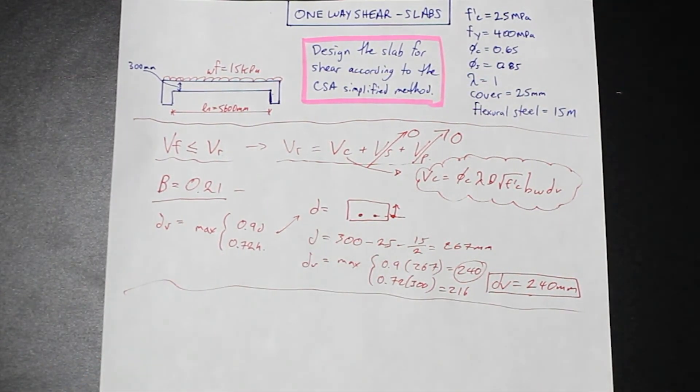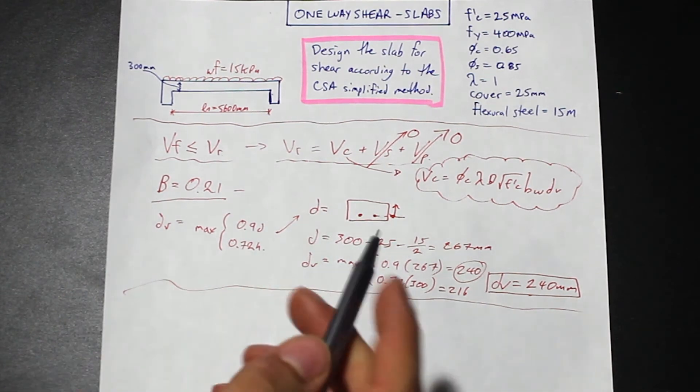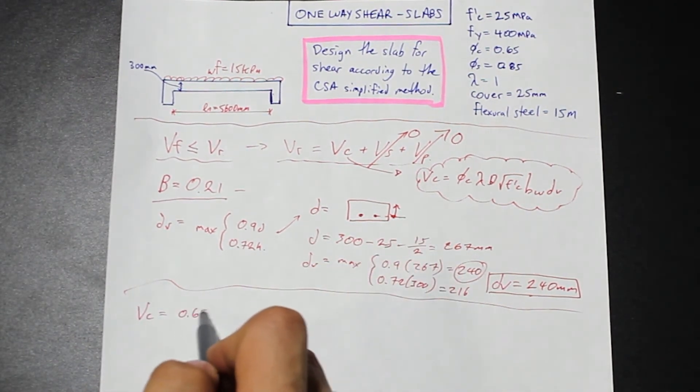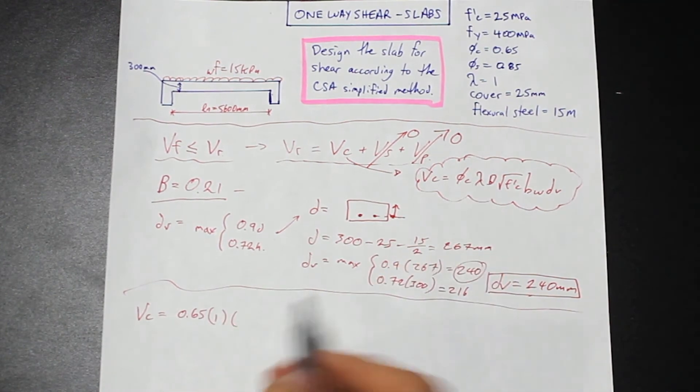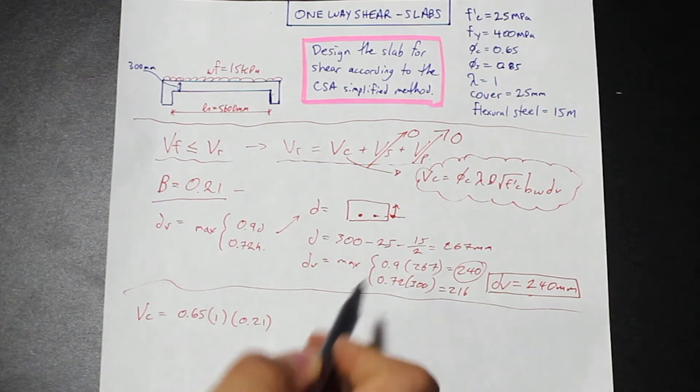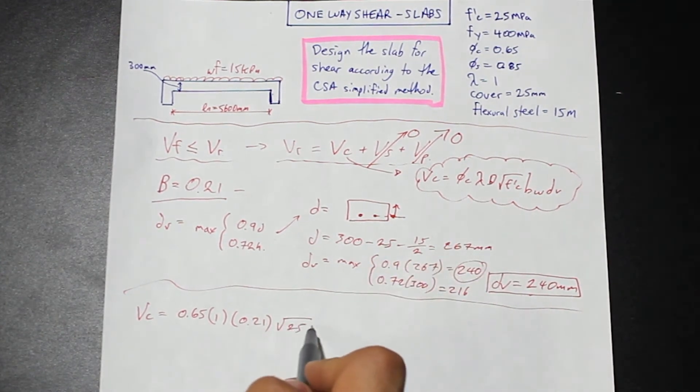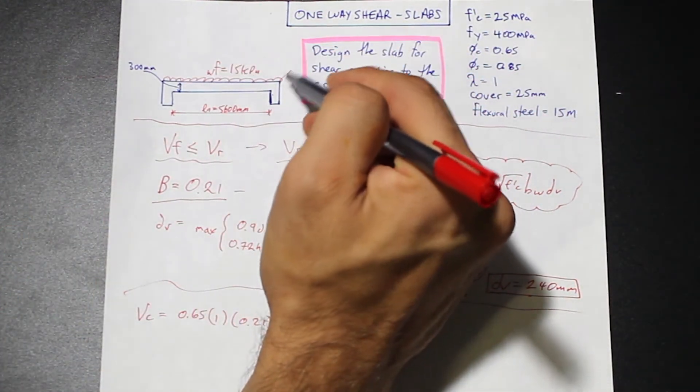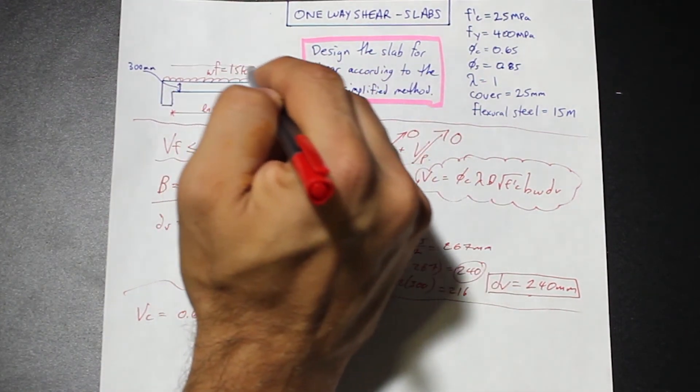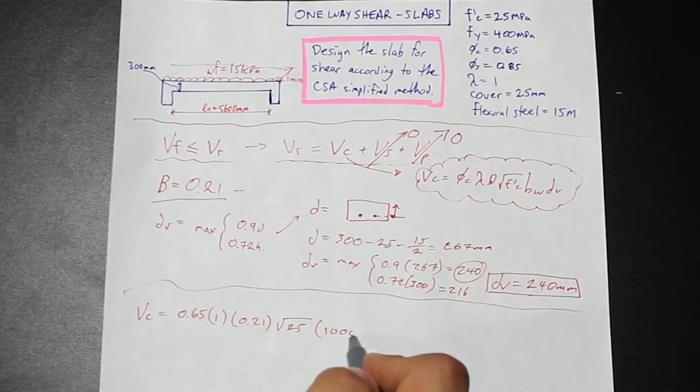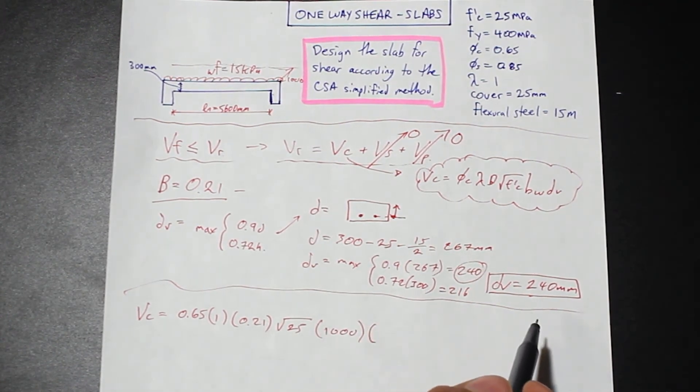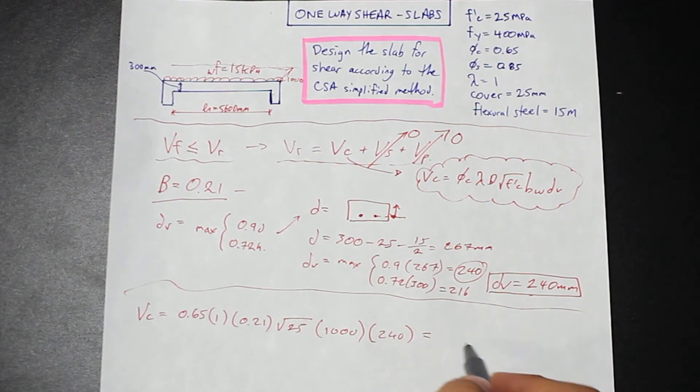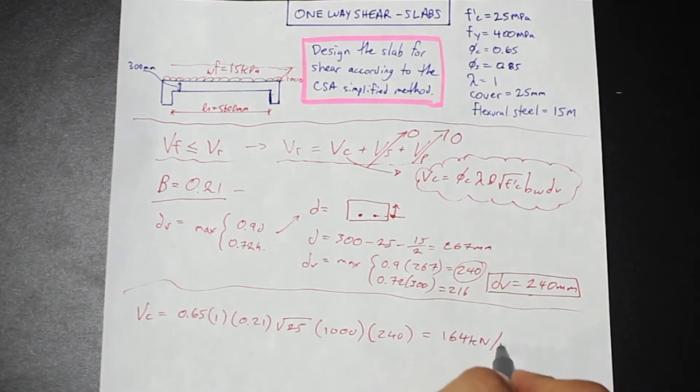Now that we have all of our parameters, we can plug in and find our VC. The shear resistance of our concrete is simply phi c, which is 0.65, times lambda, which is 1, times beta, we found beta is 0.21, times root f prime c, which is root 25, times bw. Since we're taking a 1 meter depth of our slab, we're calculating shear per meter, we're going to take 1,000. Make sure we get our units right here. And finally, we have dv, which is 240.